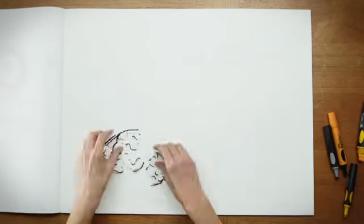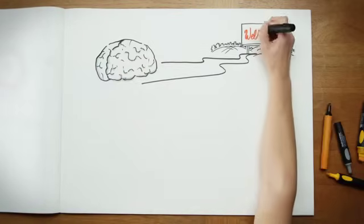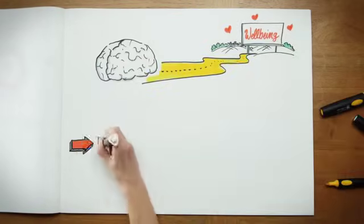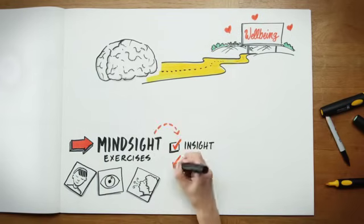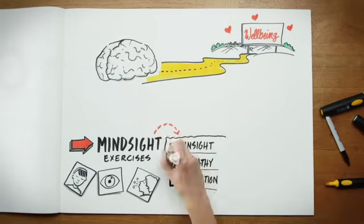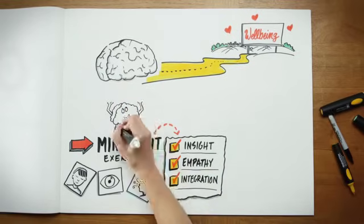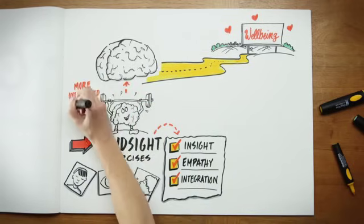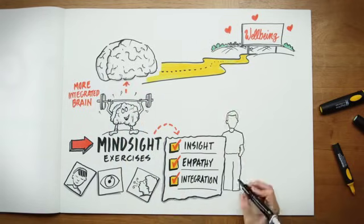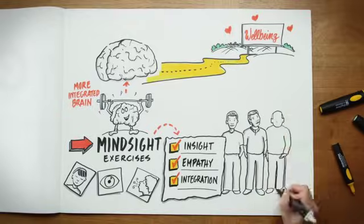And you can do mind-sight exercises. These are exercises that increase insight, empathy, and integration. And if you do them as an adolescent—and you can also do them as an adult—you'll actually increase the integration of your brain as your brain is growing, not just during adolescence but throughout the lifespan.